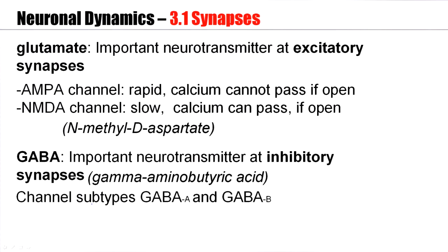Excitatory synapses are not the only one. There are also inhibitory synapses. Inhibitory synapses use the neurotransmitter GABA, and it comes in two subtypes, GABA-A and GABA-B.